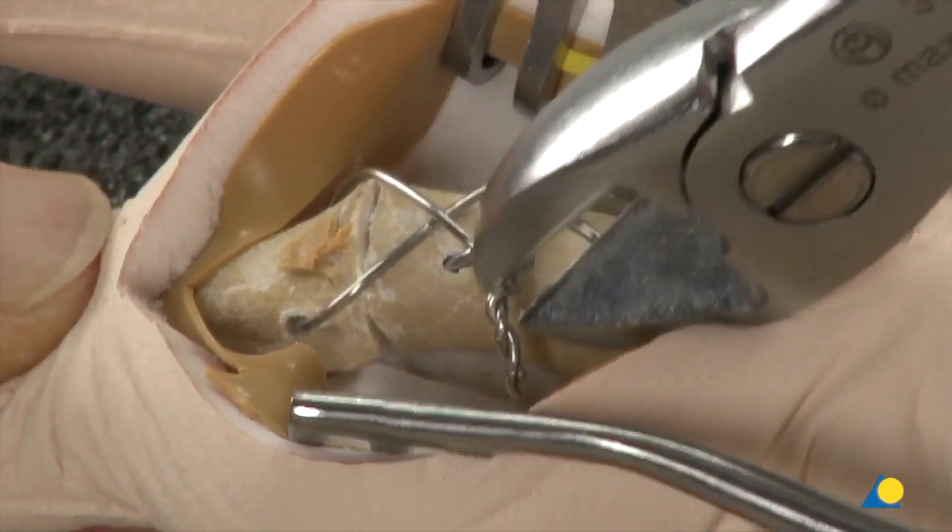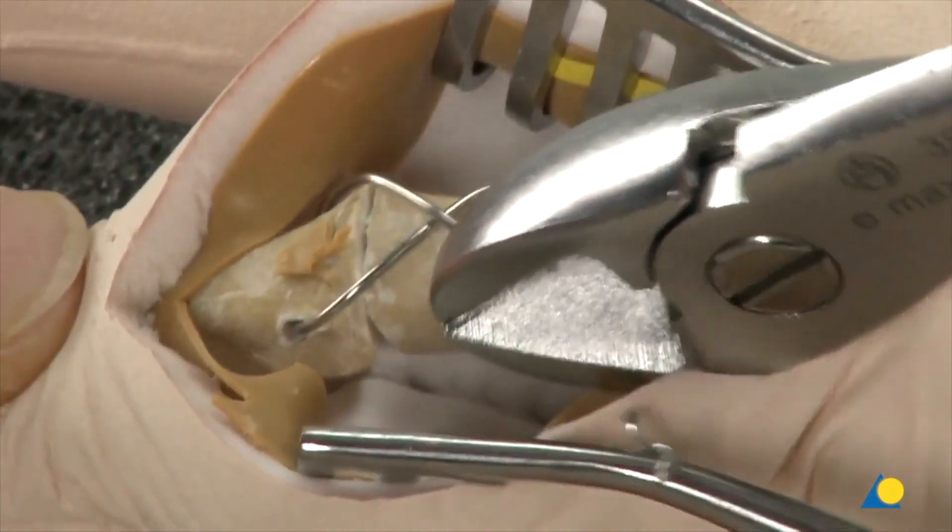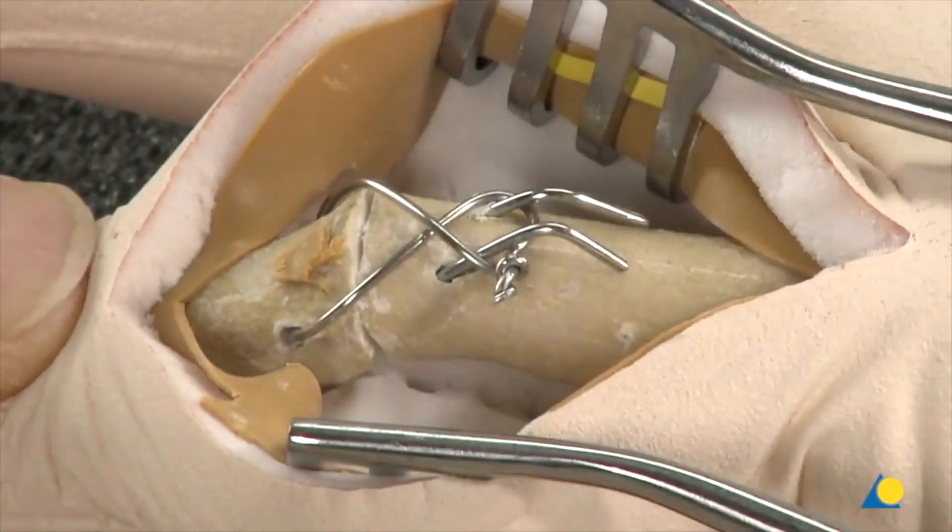Finally, the twisted circlage wire is trimmed and bent to the side to minimize irritation to the extensor apparatus. The extensor apparatus is repaired at the end using a running non-absorbable suture.